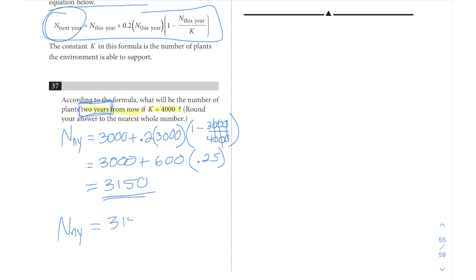We'll have 3,150 as our amount for the current year. And then for next year, we have to solve plugging in 3,150 everywhere. We get 3,150 plus 0.2 times 3,150 times 1 minus 3,150 over 4,000, it's still the same K. Here we're going to do these calculations, 3,150 plus, and if you can do this in one step on your calculator, that's great.